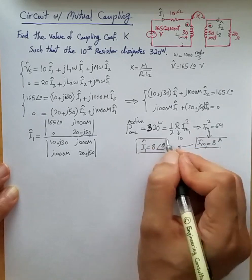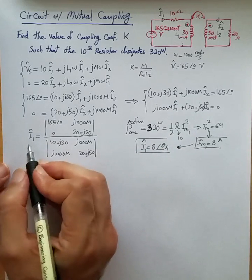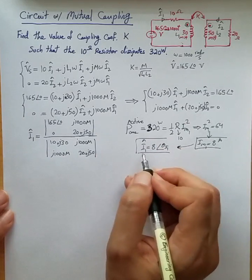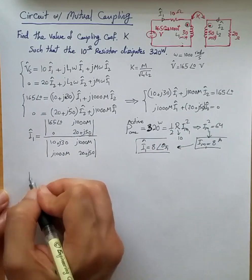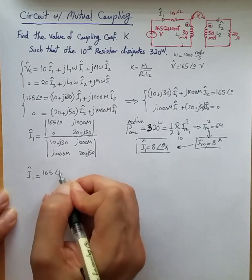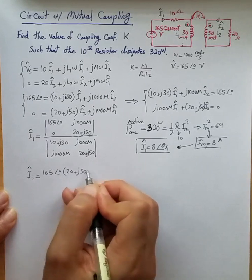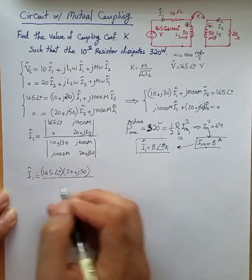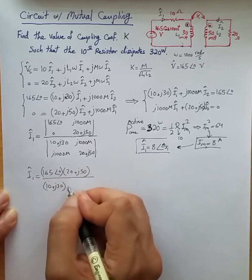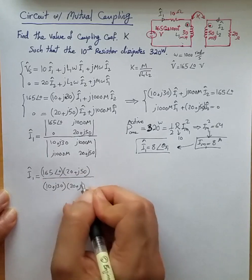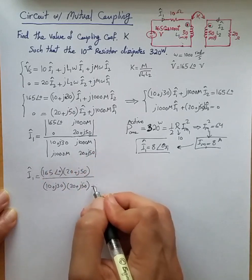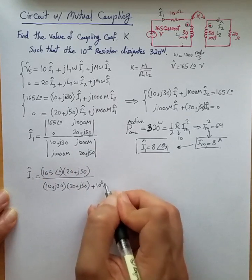Now that we know the desired magnitude for I1, we can say from here, I1 equals 165 phase 0 times (20 + j50) in the numerator. The denominator is (10 + j30)(20 + j50) minus j² is plus, and then 10⁶M².